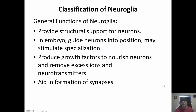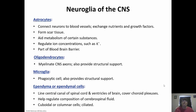Generally speaking, neuroglia provide structural support for neurons. In the embryo, they guide neurons into position so they can specialize. They also produce growth factors to nourish neurons, control the environment by removing excess ions or neurotransmitters, and aid in the formation of synapses. There are six types of neuroglia — four in the central nervous system and two in the peripheral nervous system. In the CNS, astrocytes control the environment: they connect neurons and blood vessels, help exchange nutrients and growth factors, form scar tissue, regulate ion concentrations, help metabolism, and are part of the blood-brain barrier.